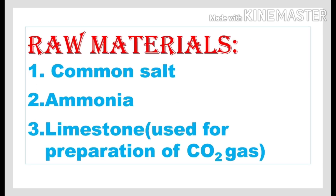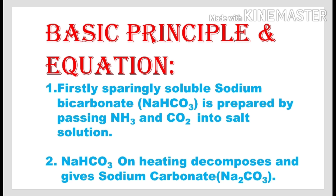In the Solvay Ammonia Soda Process, three raw materials are used: Common Salt, Ammonia, and Limestone. Limestone is mainly used for the production of Carbon Dioxide. The basic principle of this process is that Sodium Bicarbonate is sparingly soluble in water, whereas Sodium Carbonate is completely soluble in water.